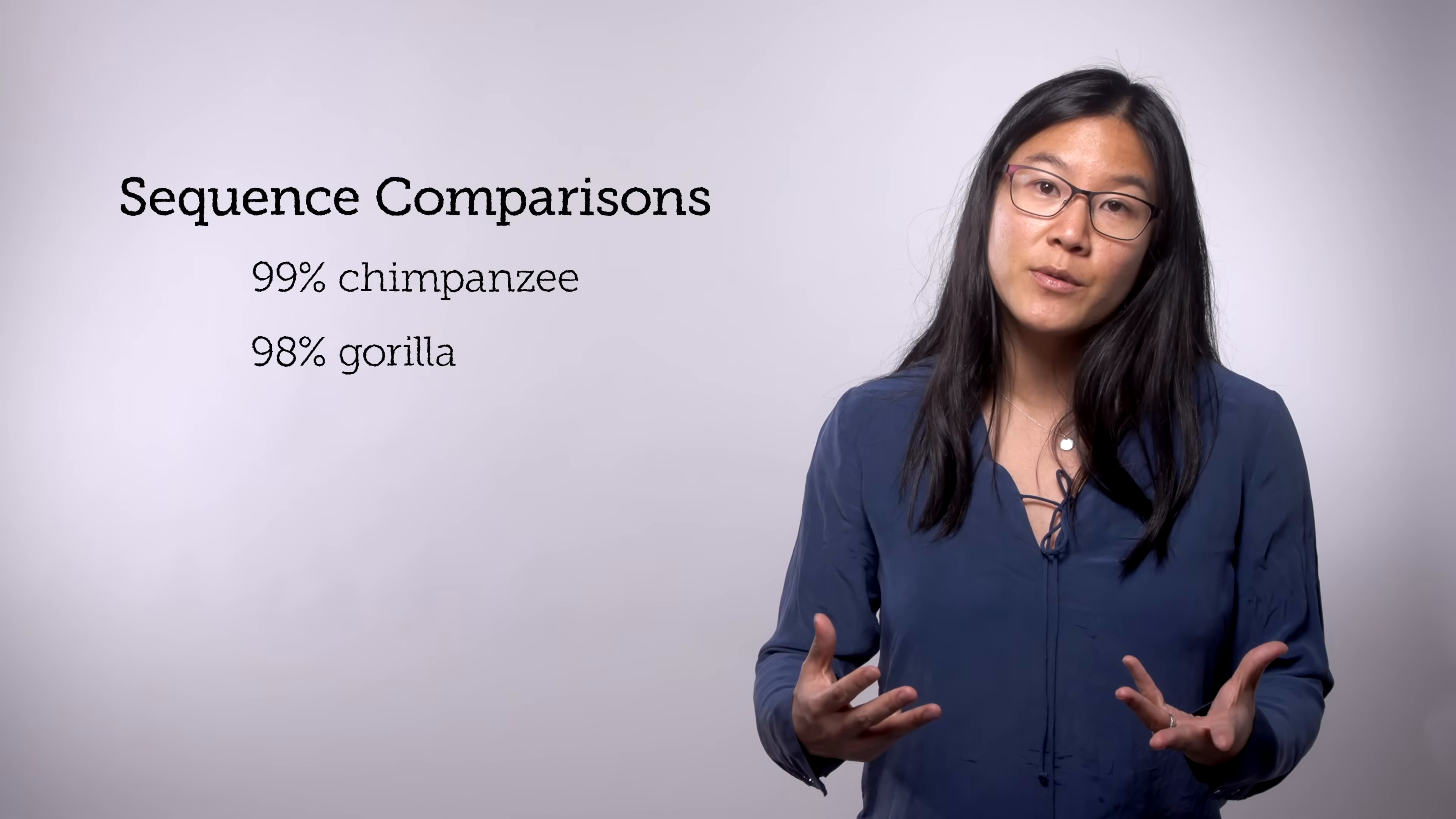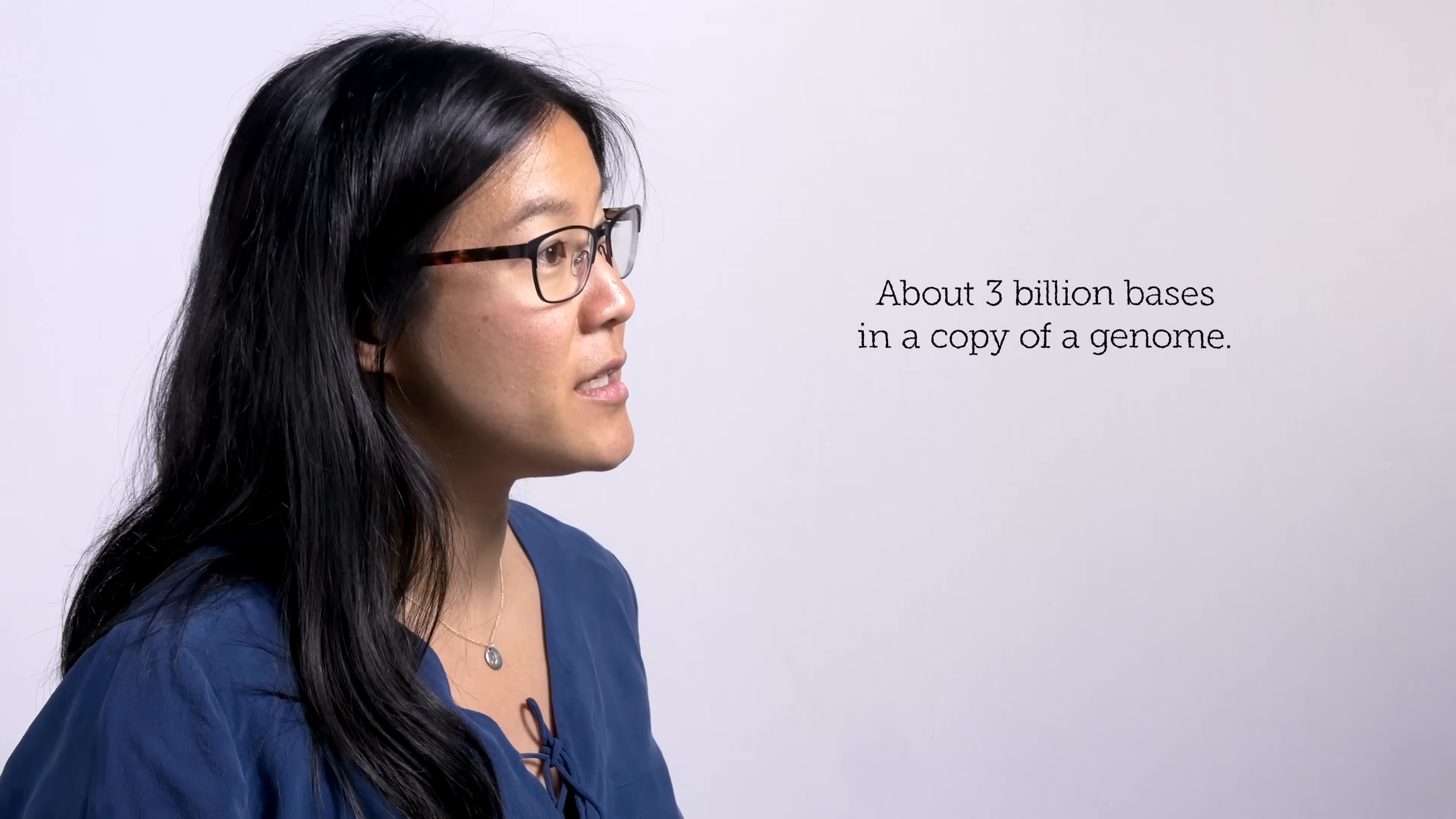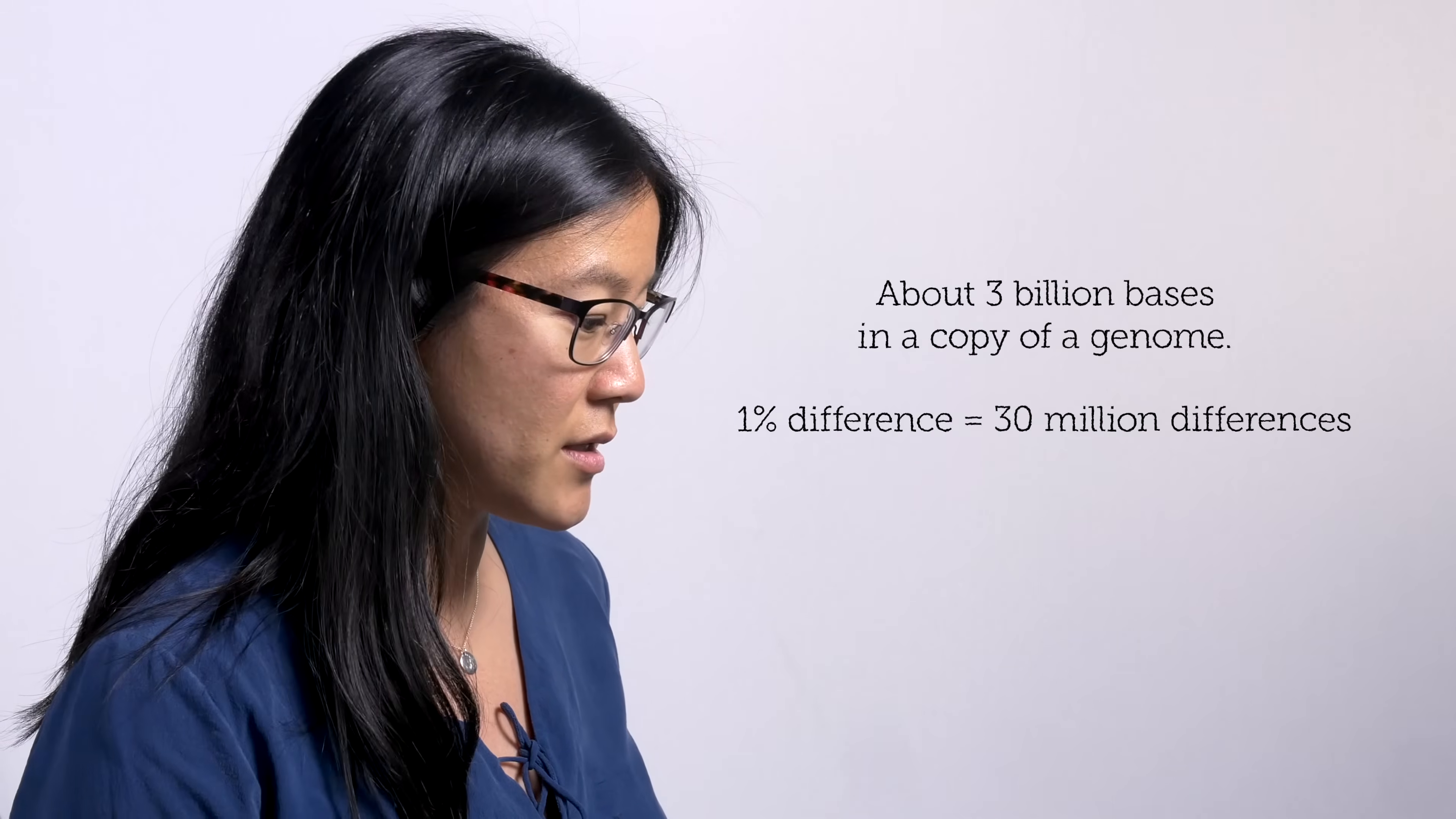And if we go to baboons, a monkey species that I study, the similarity becomes something like 94%. We can order those levels of similarity to understand the branching order of different parts of the tree. That difference doesn't sound like a lot, but it actually is at the DNA base pair, the individual DNA letter level. There are about 3 billion base pairs of DNA in a single copy of the human genome. When we think about a 1% difference between humans and chimpanzees, what that actually translates to is about 30 million differences at individual letters across the genome.